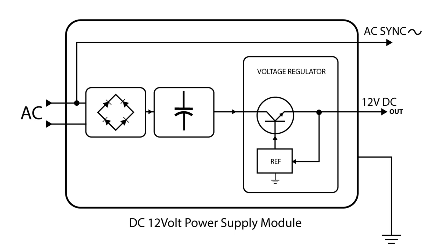A power supply is a standard linear design. AC from the power transformer is rectified, filtered by a large capacitor, and fed to a linear regulator with a voltage reference. The main output is 12 volts DC which powers the whole clock. It also outputs a synchronization signal for timekeeping.